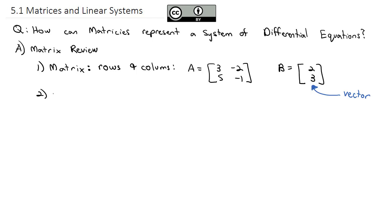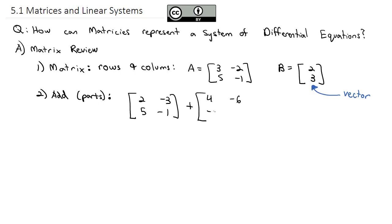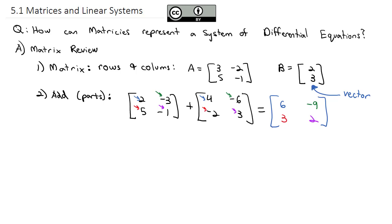One thing we can do with matrices is add them together by adding the corresponding parts. For example, [2, -3; 5, -1] plus [4, -6; -2, 3]: in the first row, first column, 2 and 4 add to give 6; negative 3 and negative 6 give negative 9; 5 and negative 2 give 3; and negative 1 and 3 give 2. We add a matrix by just adding the corresponding parts.